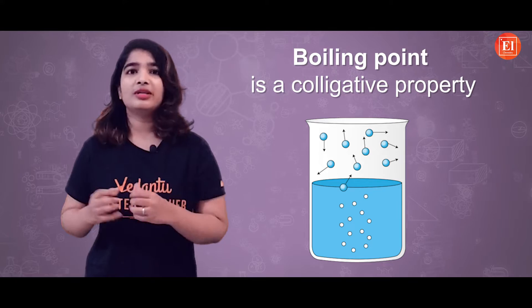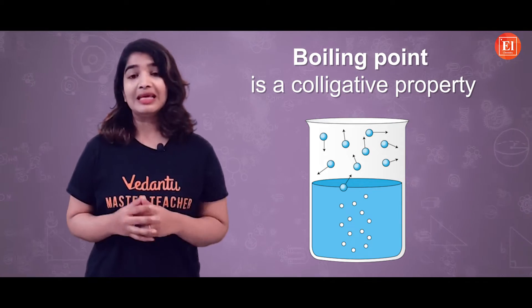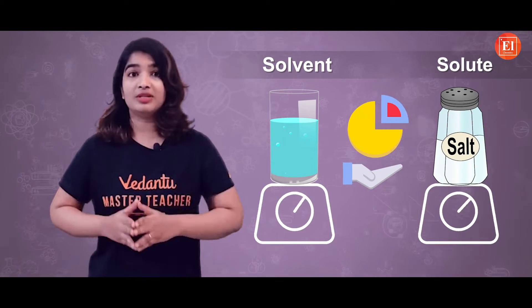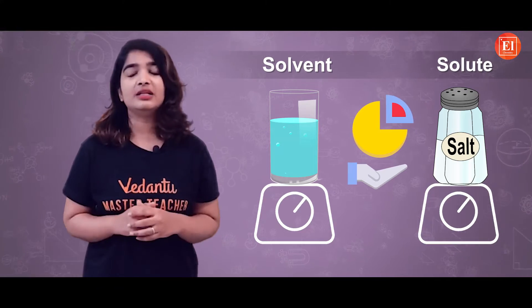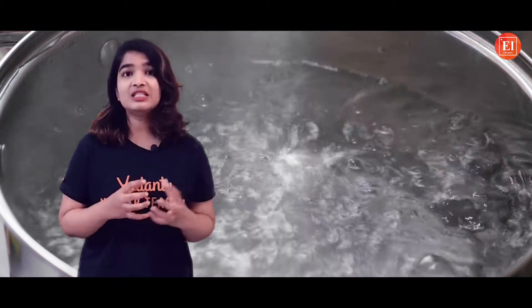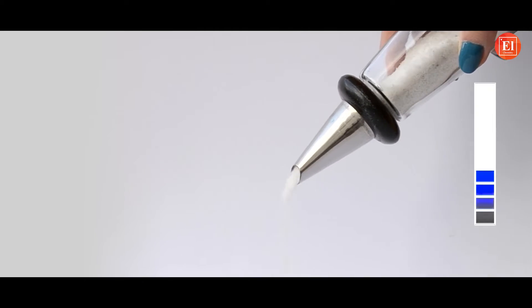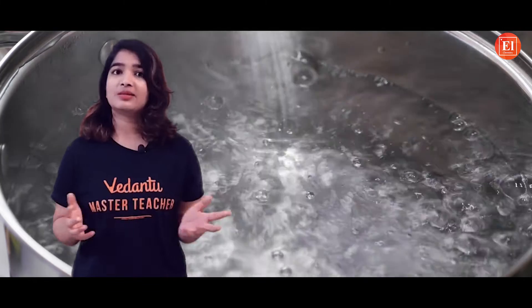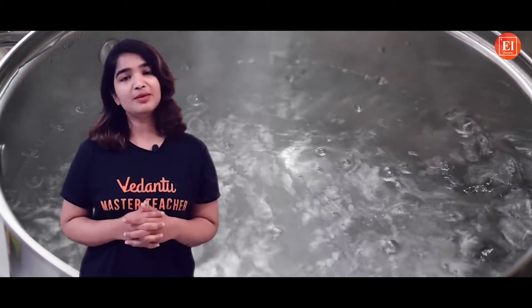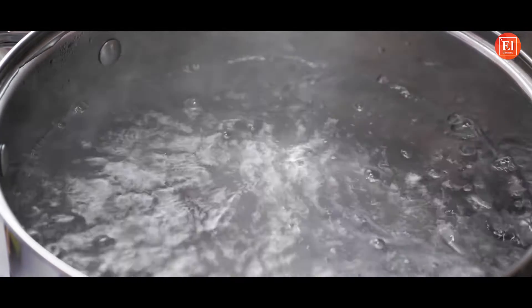We know that boiling point is a colligative property. That means it is dependent on the solute and solvent ratio, not on the identity of the solute. So the concentration of the solute determines the elevation in the boiling point, not its nature. The greater the concentration of the solute in the solution, greater will be the elevation in the boiling point. Therefore, a greater amount of heat must be supplied to the solution for it to boil.